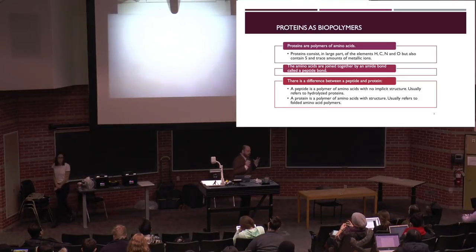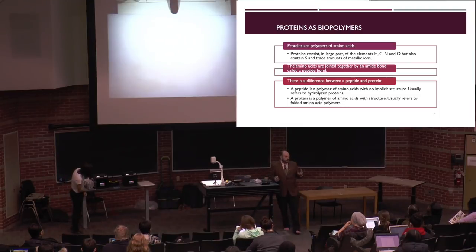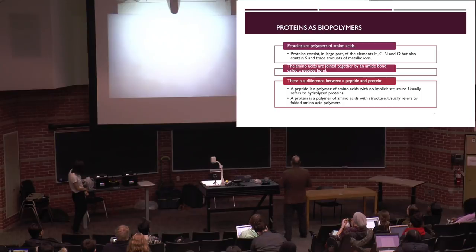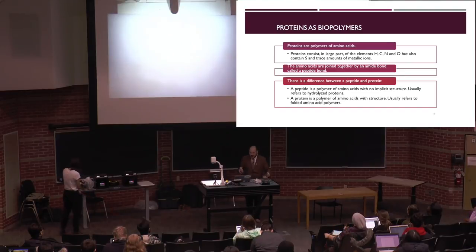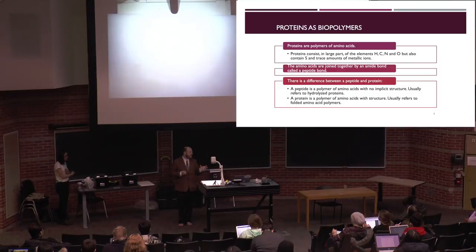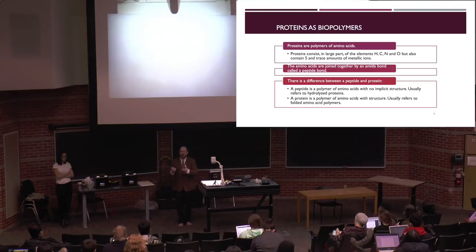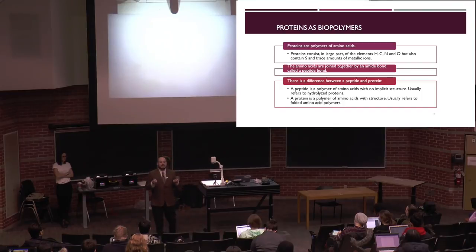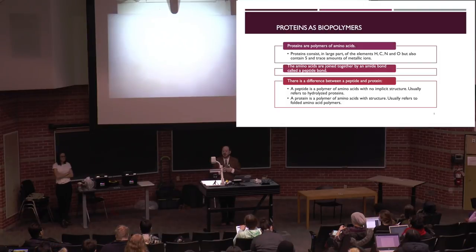Proteins consist largely of carbon, hydrogen, oxygen, and nitrogen, but also sulfur. Sulfur plays a really unique role because of its ability to form disulfide bonds. The gelation of eggs is dependent on the presence of sulfur. The formation of a gluten network is dependent on the presence of sulfur. A lot of times when we talk about structuring proteins, it relies on amino acids that have sulfur in the side chains.